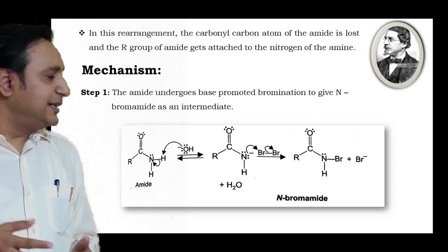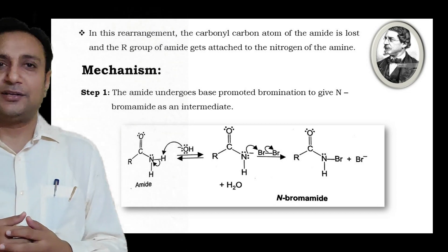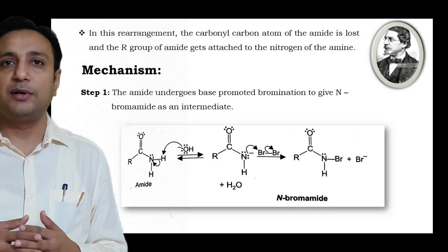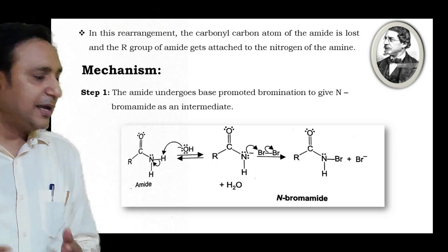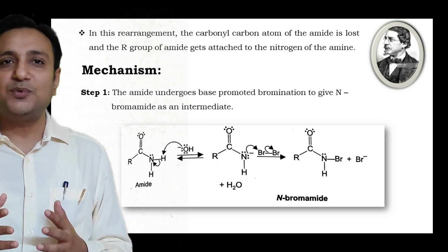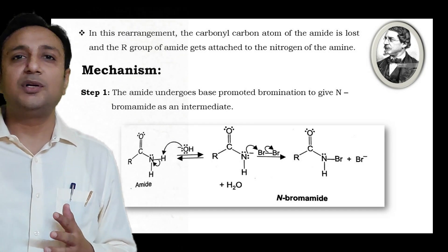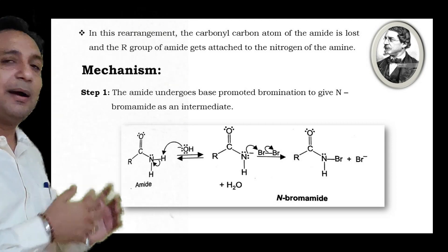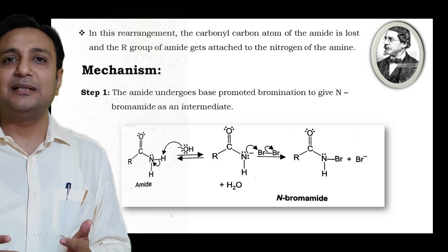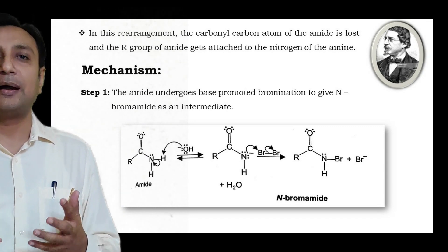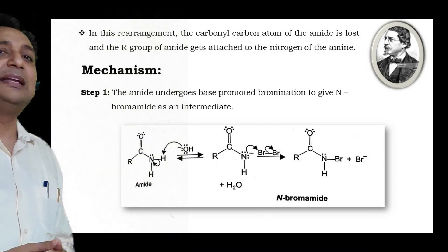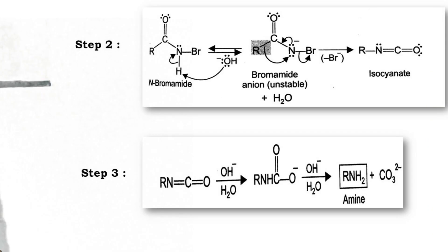Now we'll discuss the mechanism. In Step 1, the amide undergoes base-promoted bromination to give N-bromamide as an intermediate. As you see on the screen, the amide reacts with the hydroxide ion to form an anion, which then reacts with bromine to form N-bromamide.